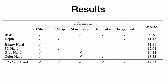In the results table, each row represents a modality. For each modality, I annotated what kind of information is contained. As you can see, the more information we add, the accuracy gradually increases up to 20%. This means that 2D shape, 3D shape, skin texture, and skin color all have a unique contribution to identifying subjects.